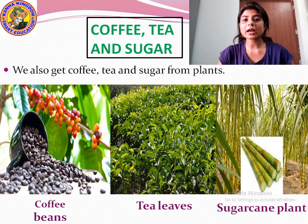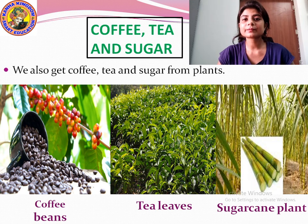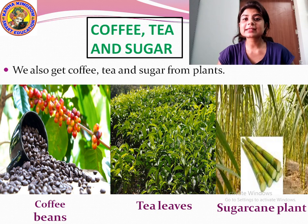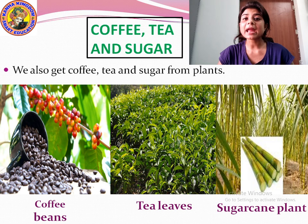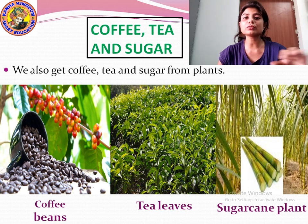Sugar — we get sugar from sugar cane, and sugar cane is the stem part of the plant. The juice of the sugar cane is squeezed out and then made into the sugar that we add in our tea and coffee.